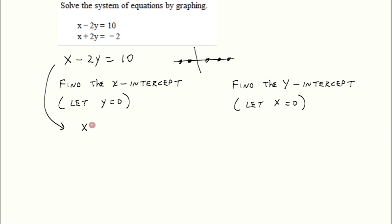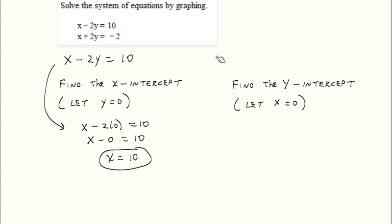So if we let y equal 0, we get x minus 2 times 0 equals 10. So we get x minus 0 equals 10, which means x equals 10. So now we know this graph crosses the x-axis at 10.